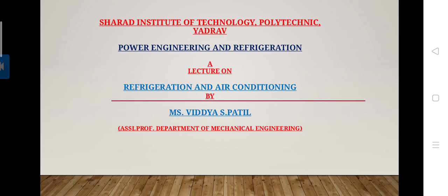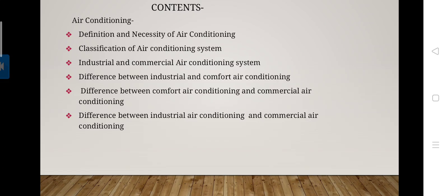Today we are going to continue our 5th unit of Refrigeration and Air Conditioning for the subject Power Engineering and Refrigeration. In this session we are going to cover the air conditioning system definition, necessity of air conditioning system, classification of air conditioning system, and industrial and commercial air conditioning system and differences between industrial air conditioning, comfort air conditioning, and commercial air conditioning.